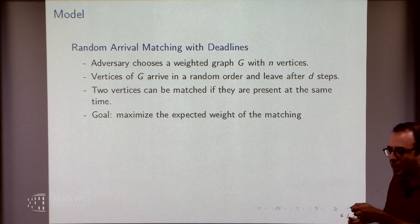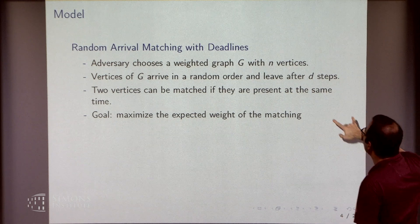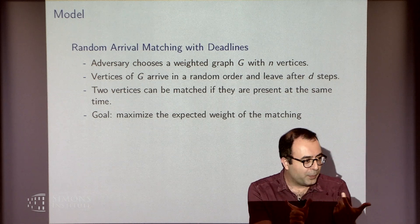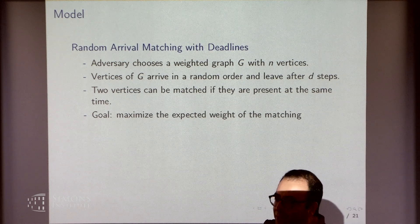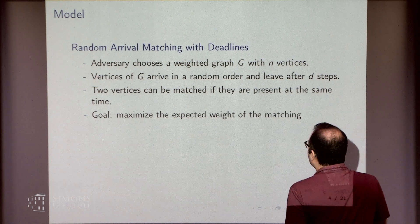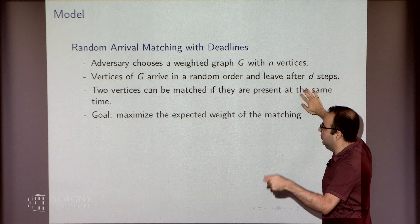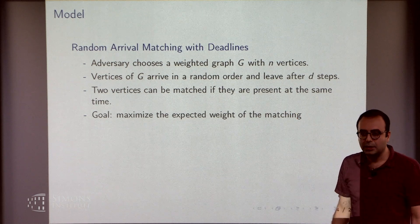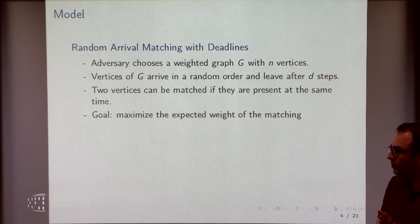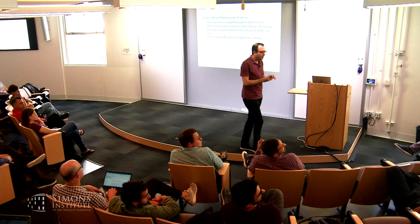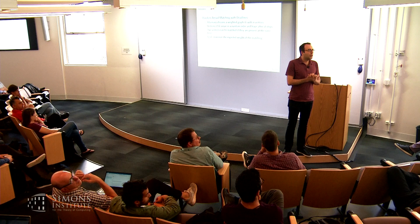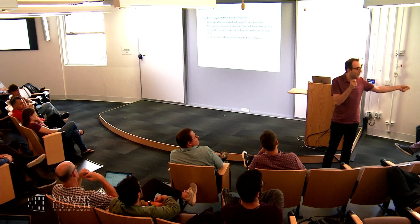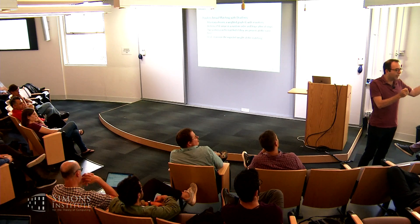At every time step, a new vertex arrives and stays in the system for D steps, so you have D steps to match that vertex. Two vertices can be matched to each other if the intervals in which they are present have an intersection. Vertices come one by one, you decide who to match to each other, and at the end you get some matching. Your goal is to maximize the expected weight of the matching. The information is coming online — every time a new vertex arrives, you can observe the weight of the edges between that vertex and other vertices that are currently present.